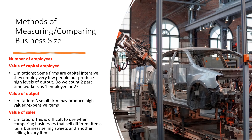We've also got value of sales. This is often used when comparing the size of retailing businesses, especially retailers selling similar products — for example, supermarkets. However, a limitation of this is that it's difficult to use when comparing businesses that sell different items, for example a confectionery business and another business selling luxury items.